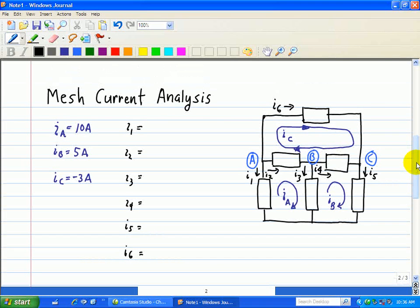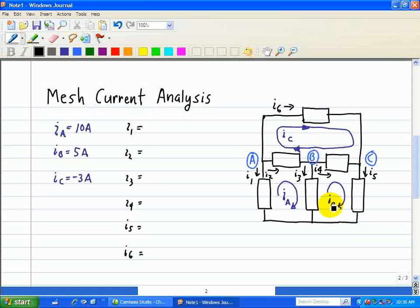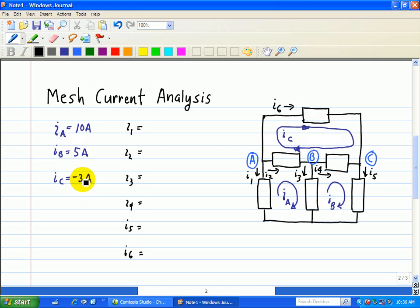Let's do the following example that uses mesh current analysis. We're given this planar circuit here. We have three loops, mesh current, and it does not enclose any elements. We're given IA as 10 amps, IB as 5 amps, and IC as negative 3 amps.